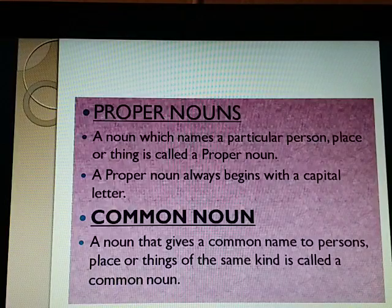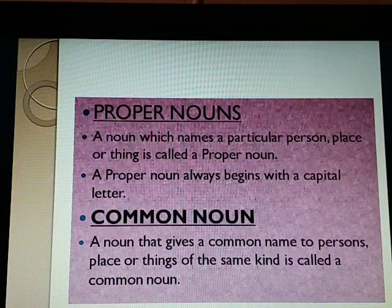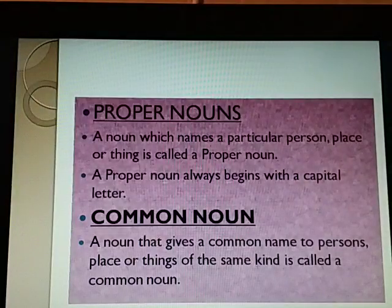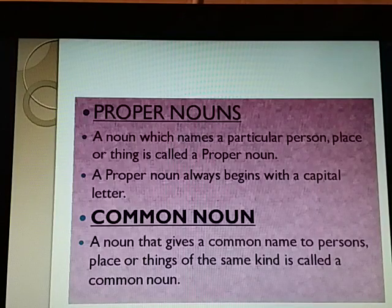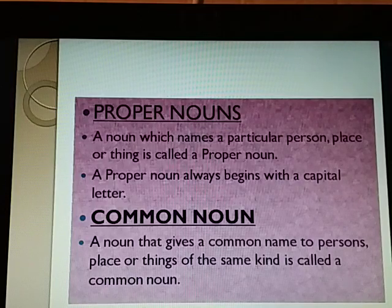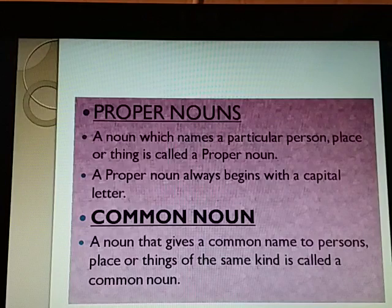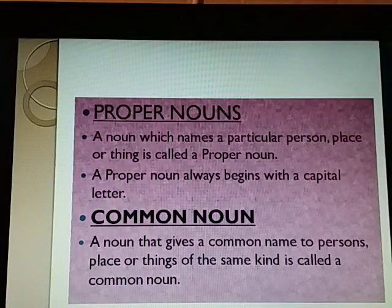Proper nouns. A noun which names a particular person, place, or thing is called a proper noun. 'Sachin' names a particular person; 'Jaipur' names a particular place; 'Hindustan Times' names a particular thing. The words Sachin, Jaipur, and Hindustan Times are all proper nouns. Proper nouns include the names of persons, countries, cities, towns, villages, historical places, rivers, ships, streets, mountains, months of the year, days of the week, festivals, books, newspapers, etc. A proper noun always begins with a capital letter.